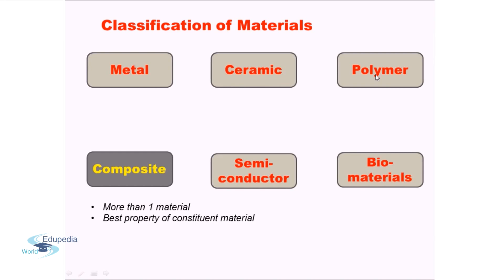Composite materials provide the best properties of their constituent materials. One simple example is concrete used for house building — it has gravel, sand, cement, and water. Each material brings an inherent property with itself and they combine together to give the required application, that is the binding property of the whole concrete system.